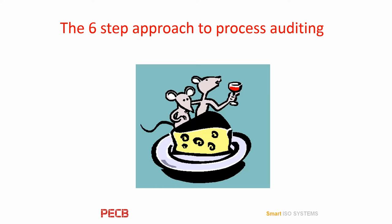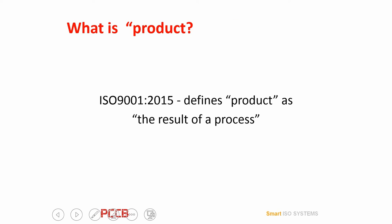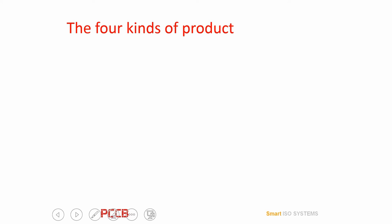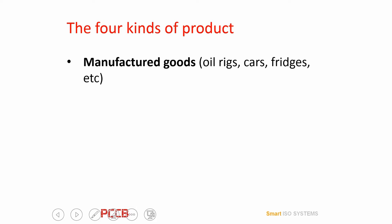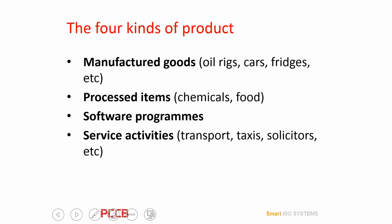Now we're going to talk about the six-step approach to process auditing. The first part is: what does your organization do? ISO 9001:2015 defines a product as a result of a process. There are four kinds of product. The first one is manufactured goods — examples include oil rigs, cars, fridges, etc. Next is processed items, such as chemical and food. The third is software programs. The last one is service activities — examples include transport, taxis, solicitors, etc.